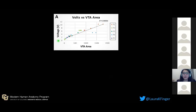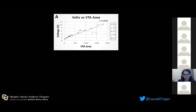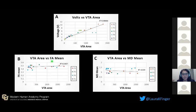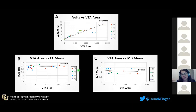We graphed voltage and VTA area — the bubble of stimulation — and can see that as voltage increases, so does the VTA area, which makes sense. We also have the FA mean and MD mean, which are both coefficients of DTI, graphed with our VTA area. There isn't a strong correlation across all patients as a general population, but each patient has a different coefficient value, which suggests we are hitting different tracts in each patient.